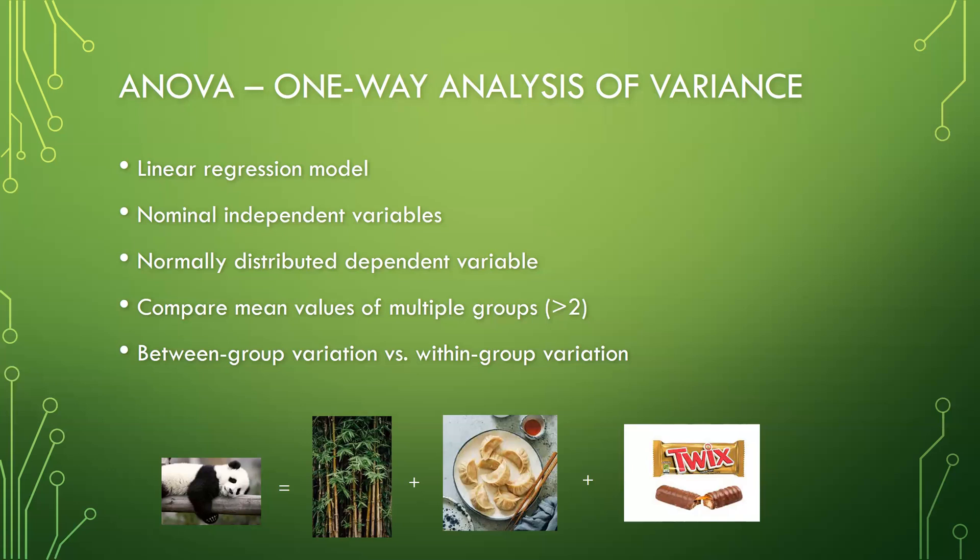ANOVA generally compares the between-group and the within-group variation. For example, in the illustration at the bottom of this slide, I want to compare the difference in calorie intake among three types of food that panda might eat: BAMBOO, DUMPLIN, and TWIX. I compare the average calorie of BAMBOO, DUMPLIN, and TWIX as independent variables in my ANOVA model for panda. Only one dependent variable can be included in an ANOVA model.